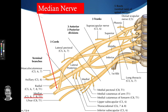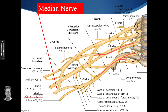The median nerve origin comes from C5, C6, C7, C8, and T1. If you follow it, C5 and C6 come down, then C7 has a branch that joins, and C8 and T1 come down to form the median nerve as well. So it has five origins spanning from C5 all the way to T1.